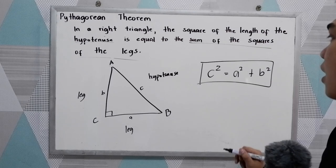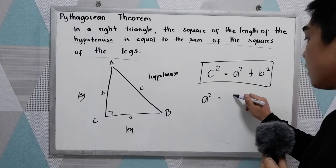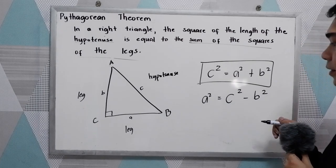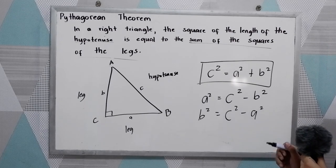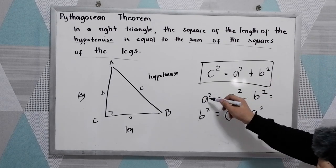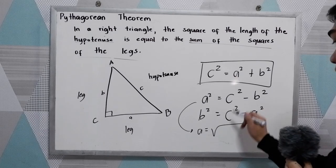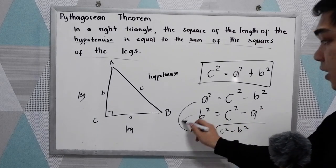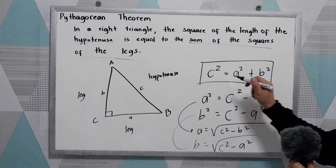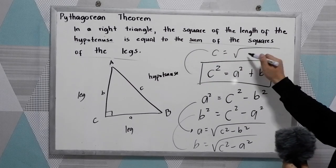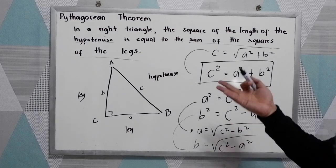If we want to get a, then a squared is equal to c squared minus b squared. And if we want to get b, b squared is equal to c squared minus a squared. Extracting the square root: a equals the square root of c squared minus b squared; b equals the square root of c squared minus a squared; and c equals the square root of a squared plus b squared. These are the different formulas we will use in the Pythagorean theorem.